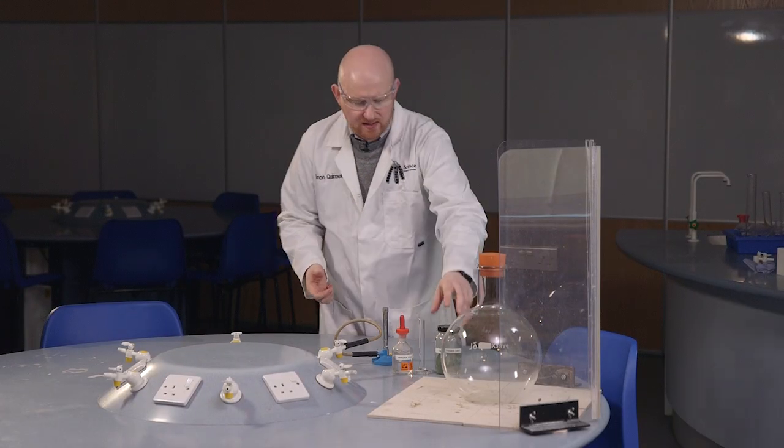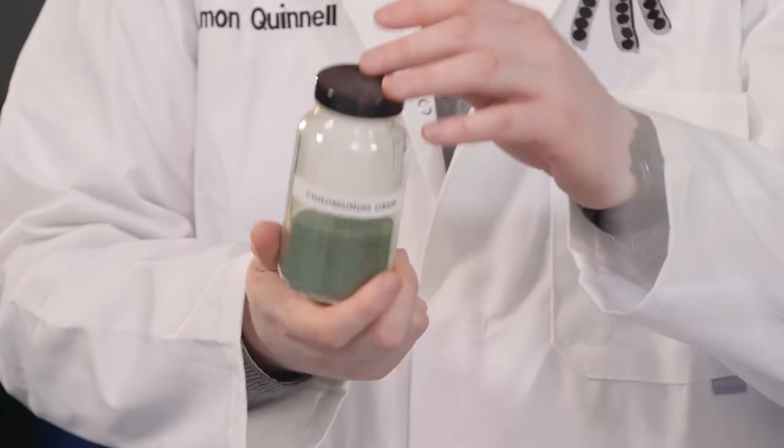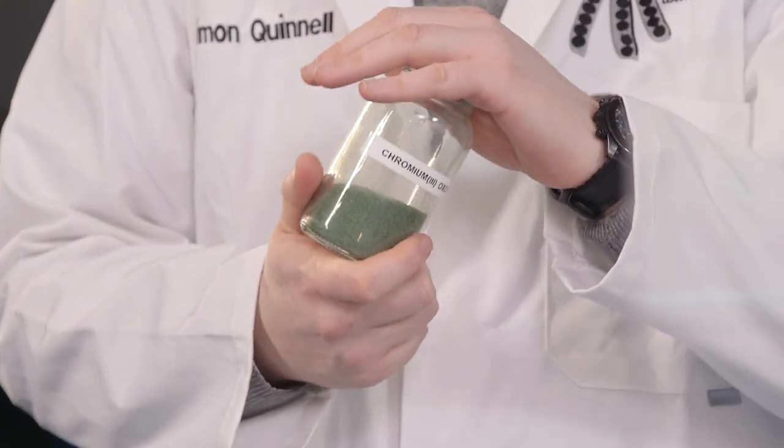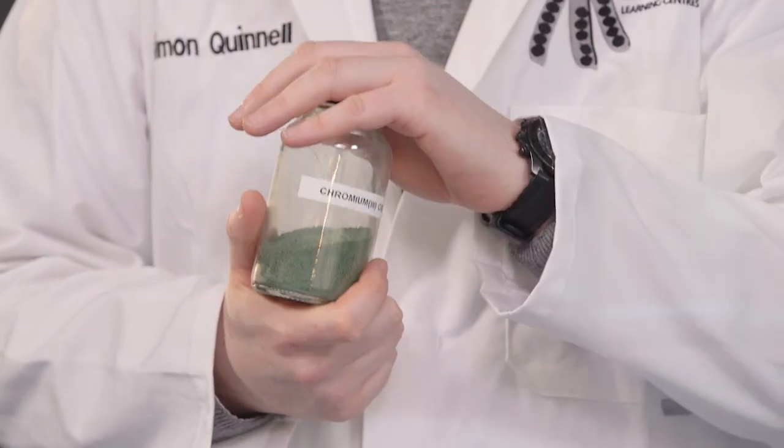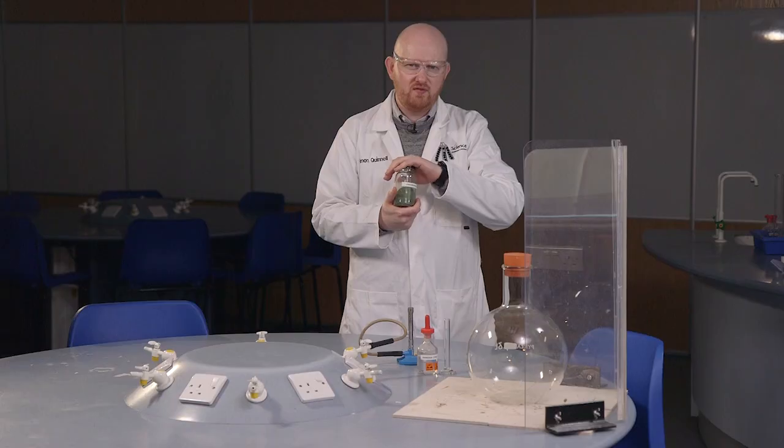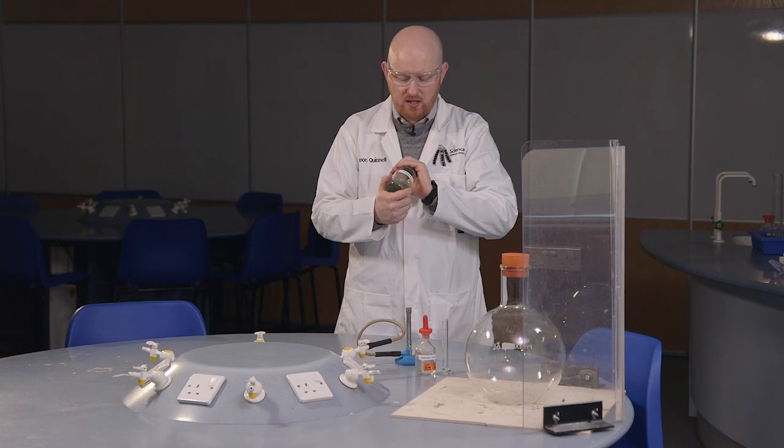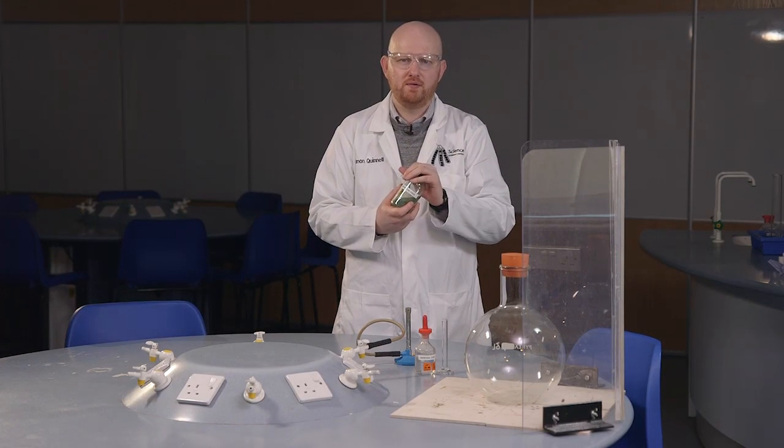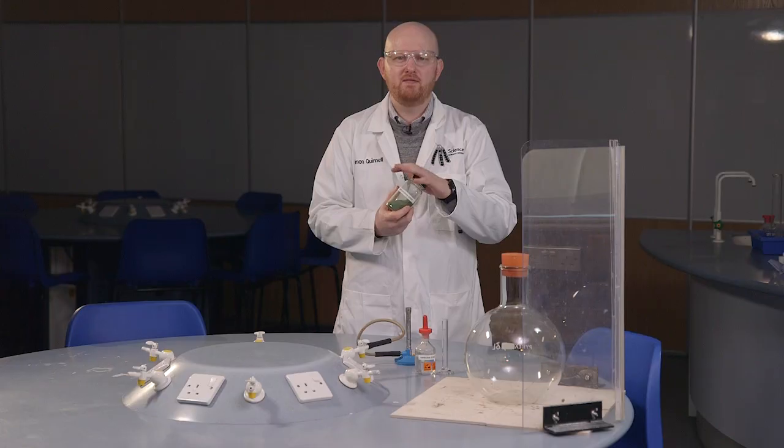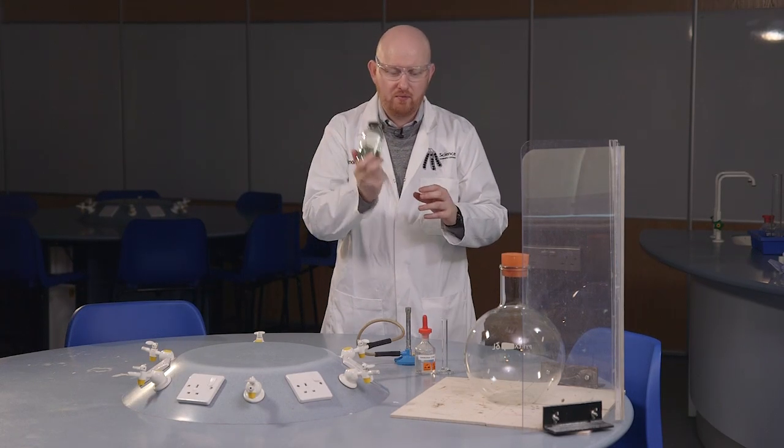One thing I'd like to say is with the chromium 3 oxide, if you haven't got any of this, this can be made from the volcano experiment using ammonium dichromate. There's instructions for this in various different places. The RSC, the Royal Society of Chemistry, and CLEAPSS also have information on the ammonium dichromate volcano. And that's where you can get some chromium 3 oxide as a by-product of that reaction.